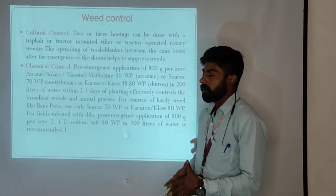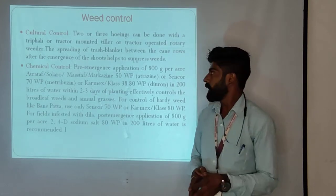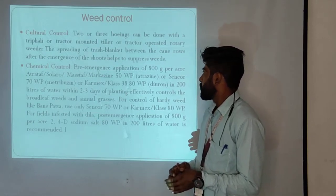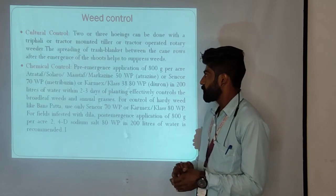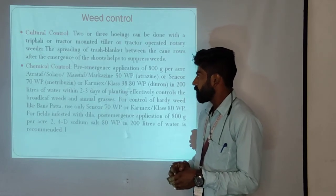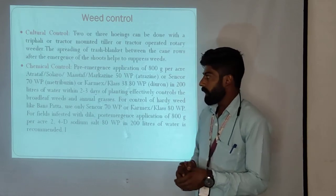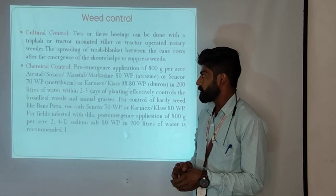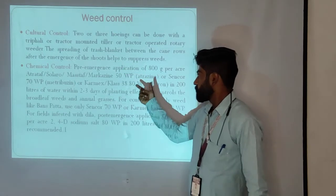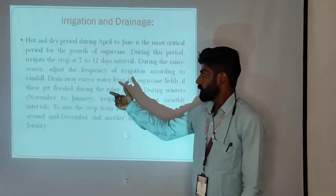For cultural weed control, two or three inter-row cultivations can be done with a trifari or tractor-mounted weeder or rotary tiller. Spreading a trash blanket between the canes after emergence of shoots helps suppress weed growth, as this acts as mulching. For chemical control, pre-emergence application of 800 grams per acre of atrazine products such as Atrataf, Solaro, Gesatop, or Metribuzin 50 WP, or Sencor 70 WP mixed into 200 litres of water.